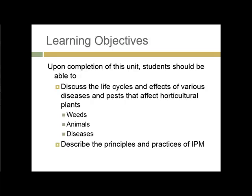Upon completion of this unit, you should be able to discuss the life cycle and effects of at least one disease or pest that affects horticultural plants. For the discussion question, I've asked you to consider alternative approaches to using chemicals, and in order to do so, you need to understand the life cycle or how one of these critters affects a plant. You should also know a little bit about the principles and practices of integrated pest management, IPM.